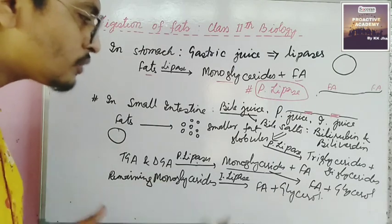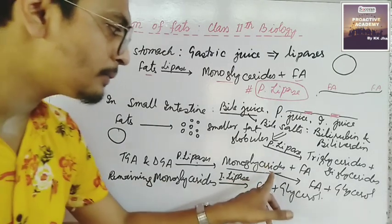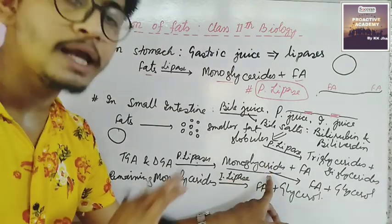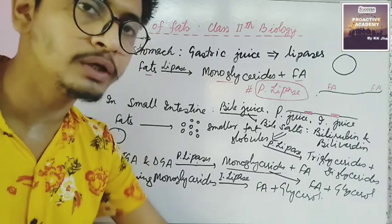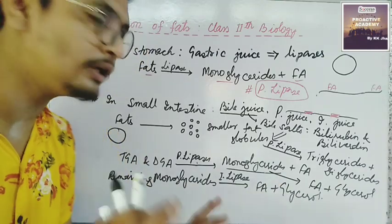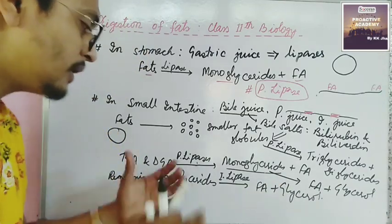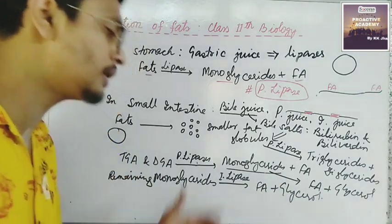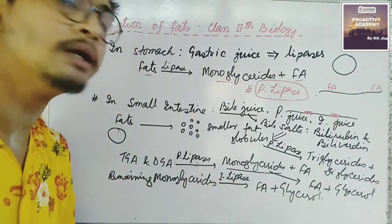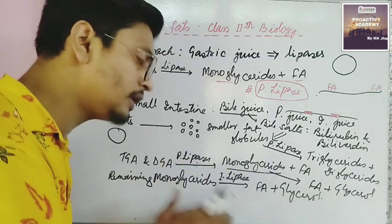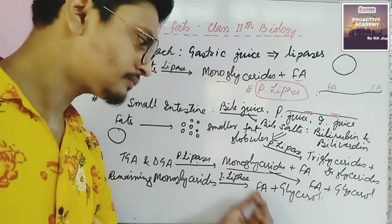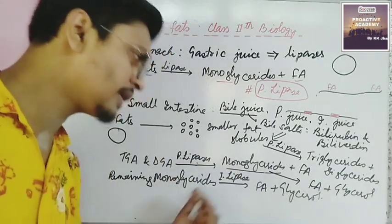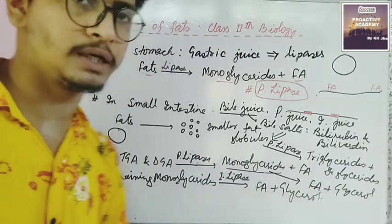The remaining monoglycerides that are not completely broken down are acted upon by intestinal lipase, which breaks down monoglycerides into fatty acids and glycerol. This completes the digestion of fats.